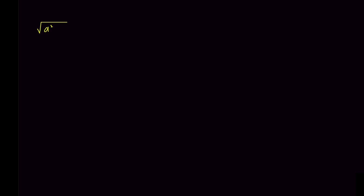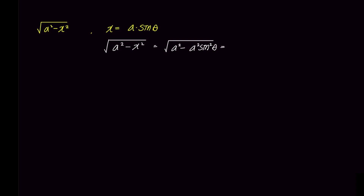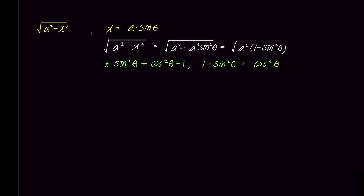If we substitute x with a times sine theta in the square root of a squared minus x squared, it becomes the square root of a squared minus a squared times sine squared theta. By factorizing out a squared, we get a squared times 1 minus sine squared theta. Using the trigonometric identity sine squared theta plus cosine squared theta equals 1, we can simplify 1 minus sine squared theta to cosine squared theta, and substituting back gives us a times cosine theta without the square root.